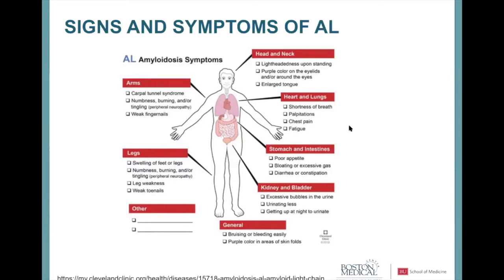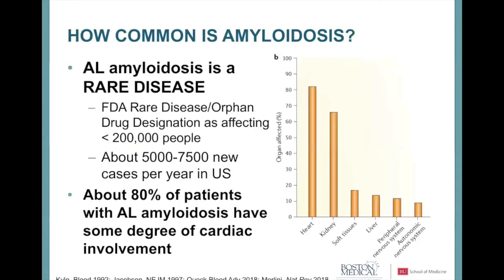Periorbital purpura — discoloration around the eyelids — is also a feature of AL amyloidosis. Low blood pressure from heart failure or autonomic dysfunction can cause dizziness or lightheadedness requiring medication. Unfortunately these symptoms overlap with many common problems like diabetic peripheral neuropathy, making it difficult for clinicians to recognize amyloidosis early. Patients themselves also need to be familiar with these symptoms so they can communicate effectively with their providers.